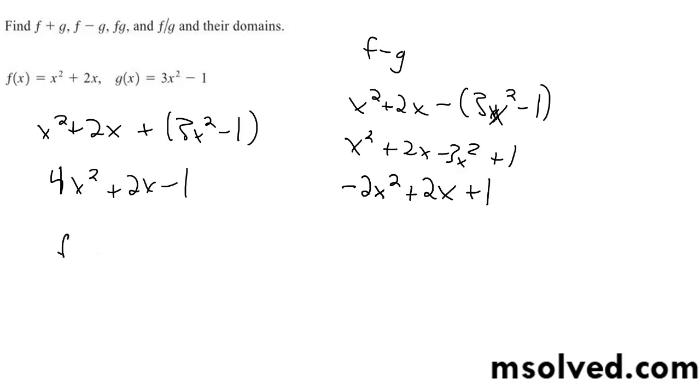And finally for f divided by g, we're going to get x squared plus 2x all over 3x squared minus 1. We could do polynomial division, but I think you can just leave it like that. That's it.